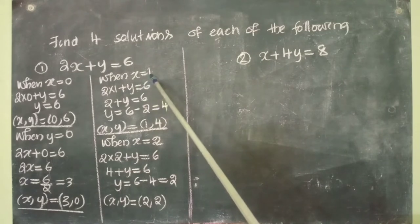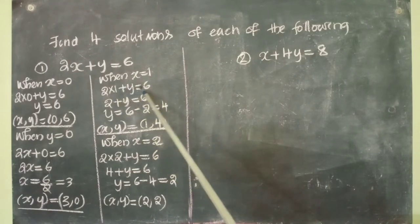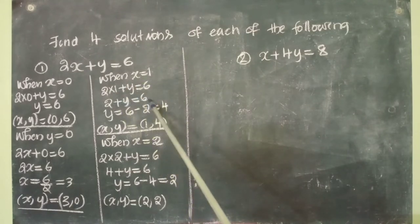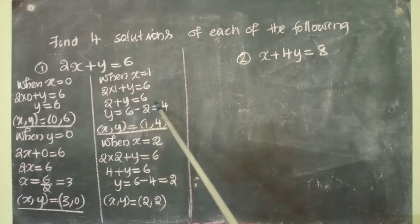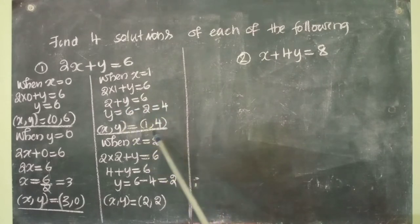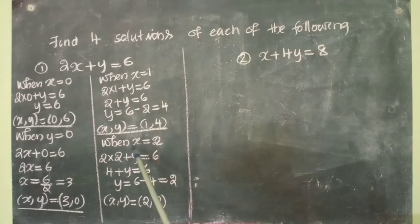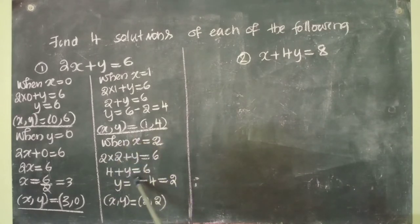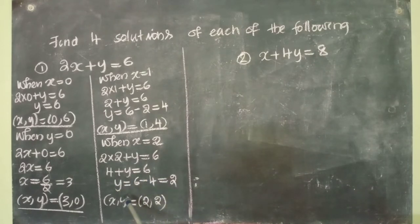When x equal to 1: 2 into 1 plus y equal to 6, 2 plus y equal to 6, y equal to 6 minus 2, that is equal to 4. Therefore (x, y) equal to (1, 4). Then when x equal to 2: 2 into 2 plus y equal to 6, 4 plus y equal to 6, y equal to 6 minus 4 equal to 2. Therefore (x, y) equal to (2, 2).